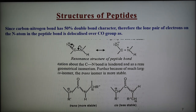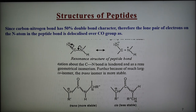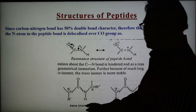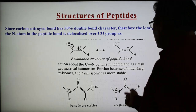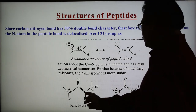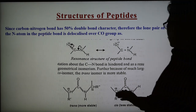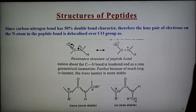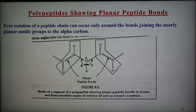Rotation about the carbon-nitrogen bond is hindered, and as a result of this hindered rotation, the peptide bond can show geometrical isomerism — that is cis-trans isomerism. Because of much larger steric repulsion between the two alkyl groups in the cis isomer compared to the trans isomer, the trans isomer is more stable. The cis isomer is less stable because there is more steric hindrance, while in the trans isomer the two alkyl groups are on opposite sides.